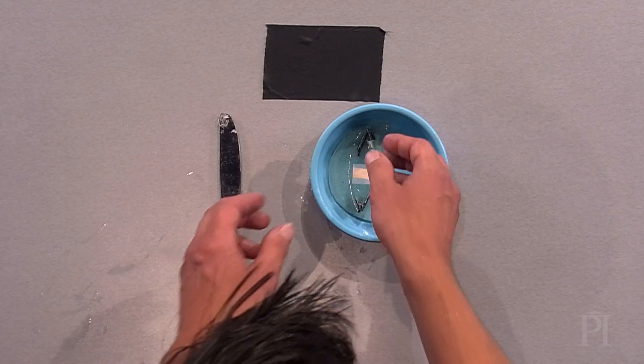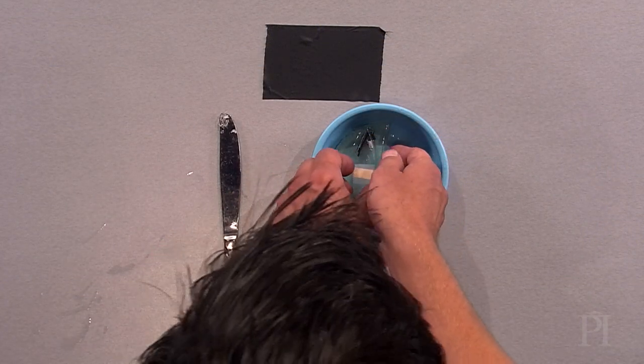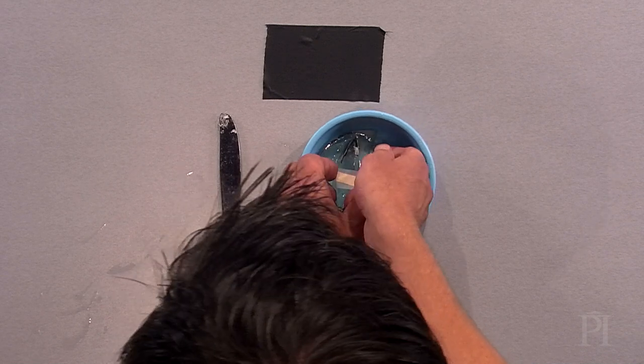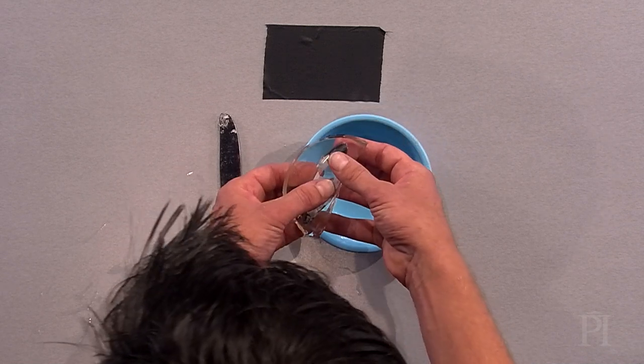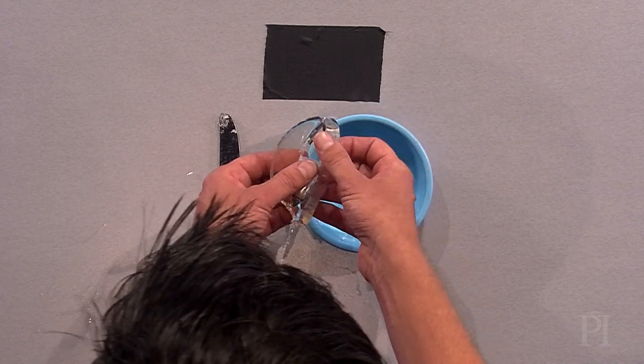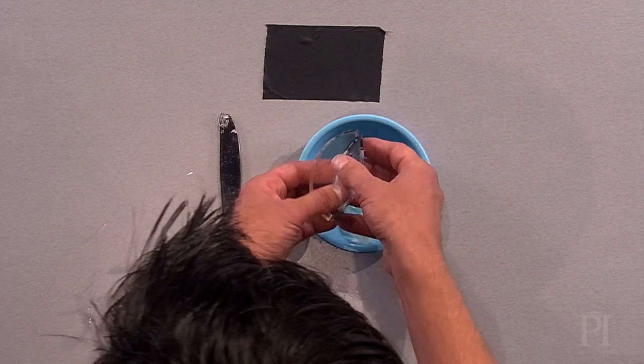Once the gelatin is set, slowly remove the mold from the dish. Next, slowly separate the lens from the mold and set the lens aside.